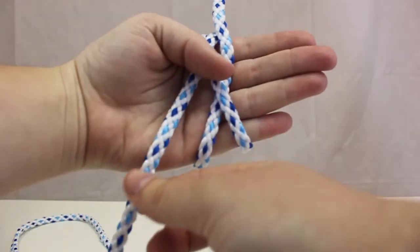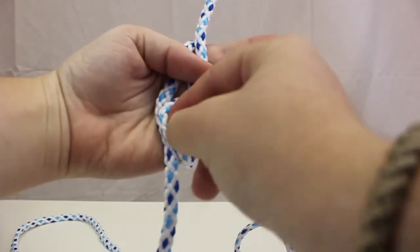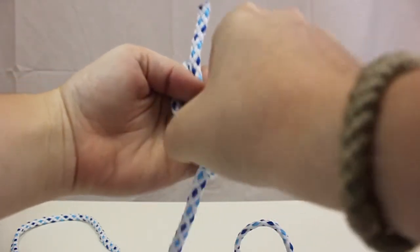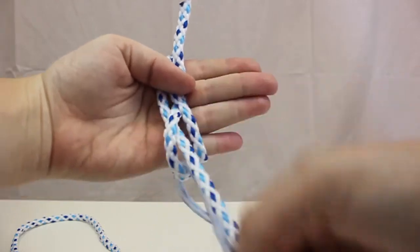Next, you're going to weave it under the middle strand and over the right strand. Pull all the way through.